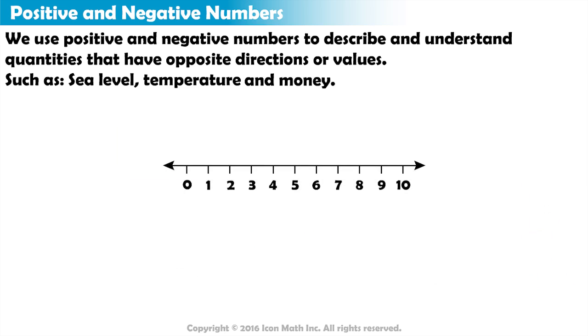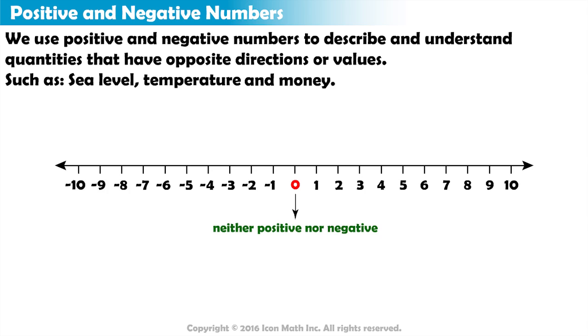Most number lines you've seen start at 0. However, just as there are an infinite number of positive numbers after 0, there are an infinite number of negative numbers before 0. In fact, 0 is the only number that is neither positive nor negative.